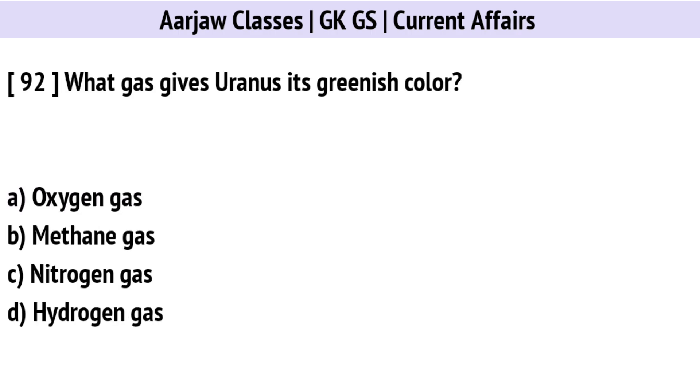What gas gives Uranus its greenish color? Correct option is B: Methane gas.